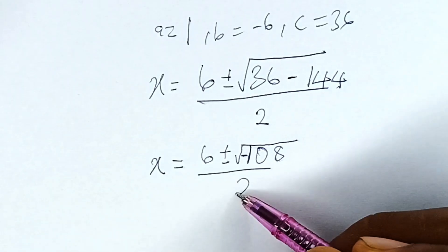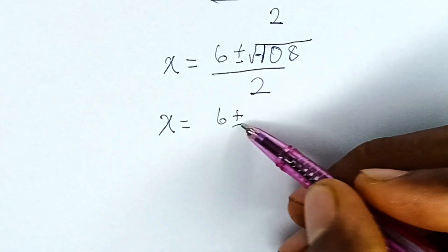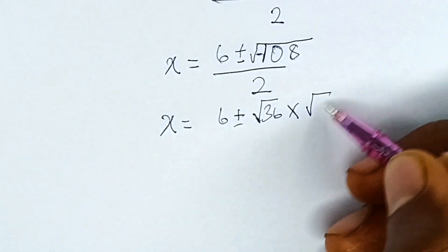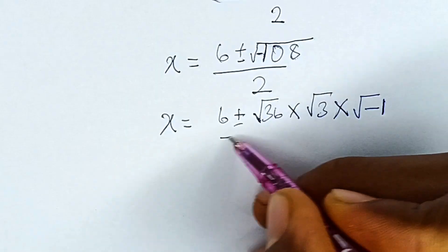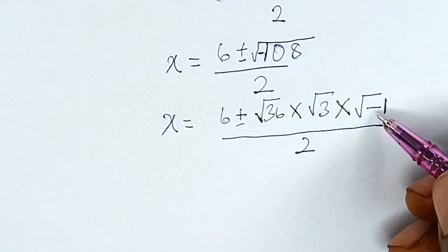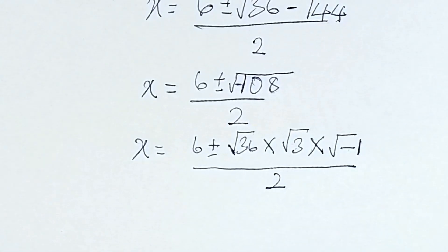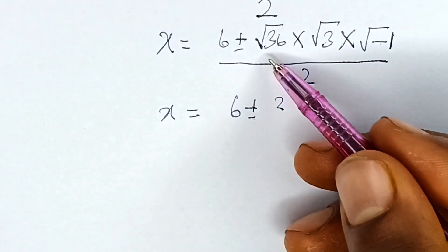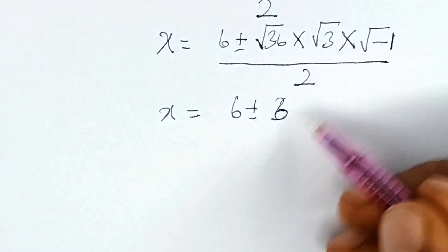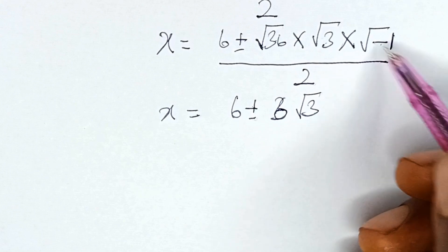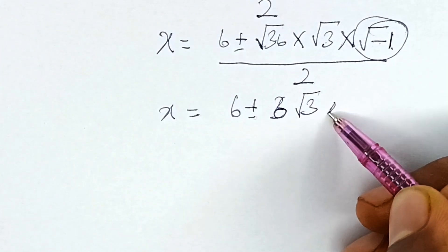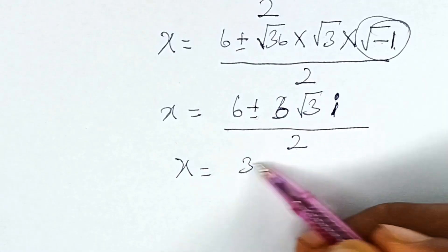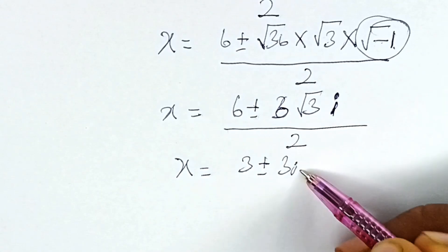So x becomes equal to 6 plus or minus square root of 144 minus 36, which is 108 — giving us negative 108 — all over 2. Now, square root of negative 108 is the same as square root of 36 times square root of 3 times square root of minus 1, all over 2. Square root of 36 is 6, and square root of minus 1 is i. So we now have 6 plus or minus 6 times root 3 times i, all over 2. Our x becomes equal to 3 plus or minus 3i root 3.